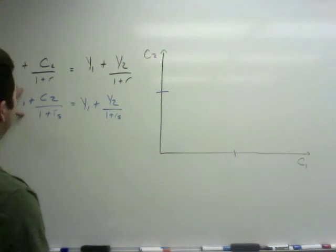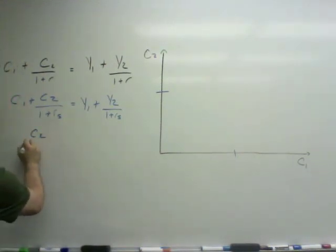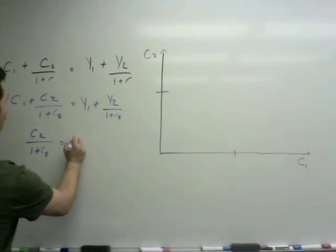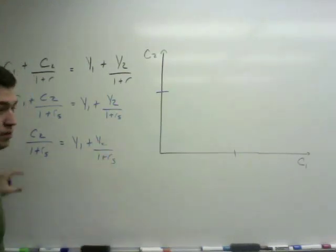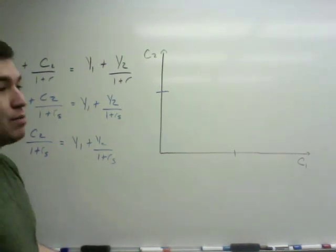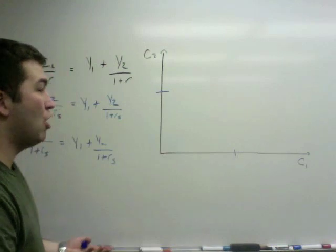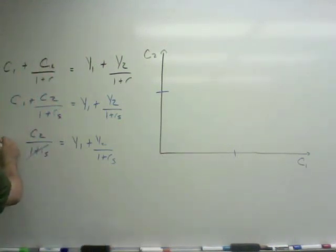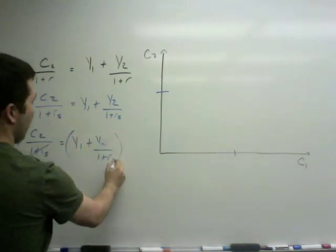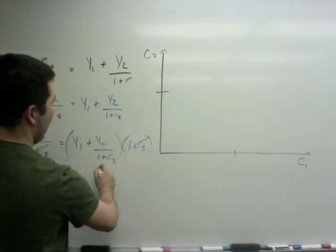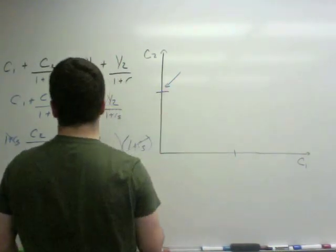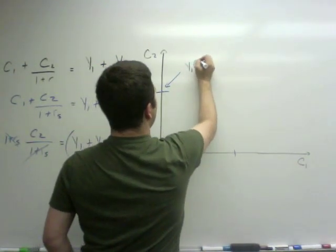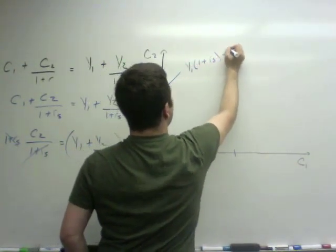If we set C1 equal to 0, we're going to get C2 over 1 plus R S equaling Y1 plus Y2 over 1 plus R S. Now let's just solve for C2. All we have to do is multiply both sides by 1 plus R S. That will cancel with the 1 plus R S, multiply everything over here by 1 plus R S. Those will cancel, we'll be left with 1 times the Y1. So this point right here is going to be Y1 times 1 plus R S plus Y2.